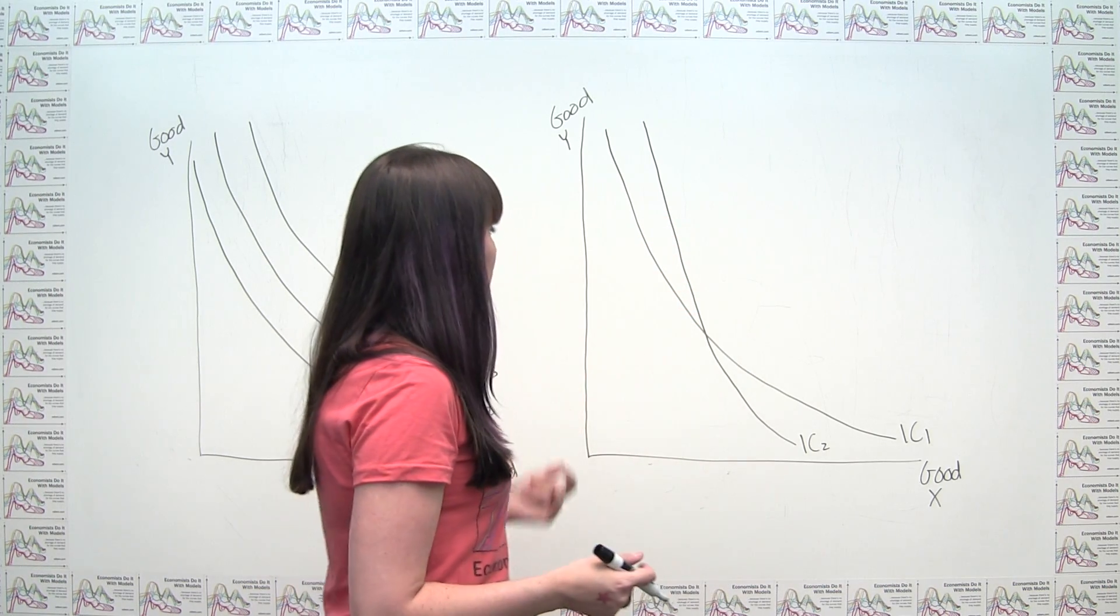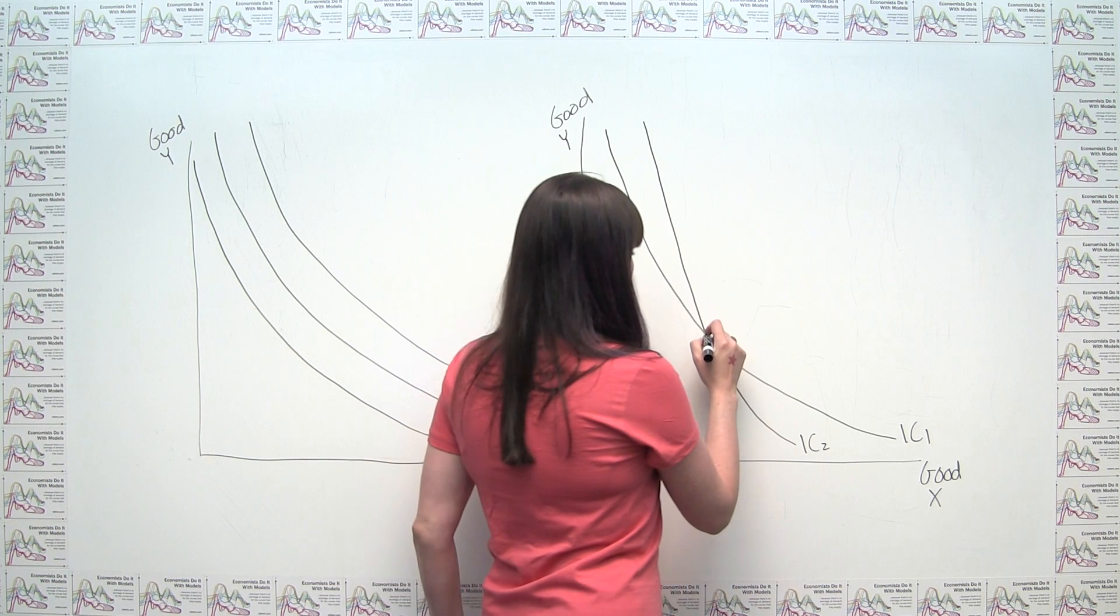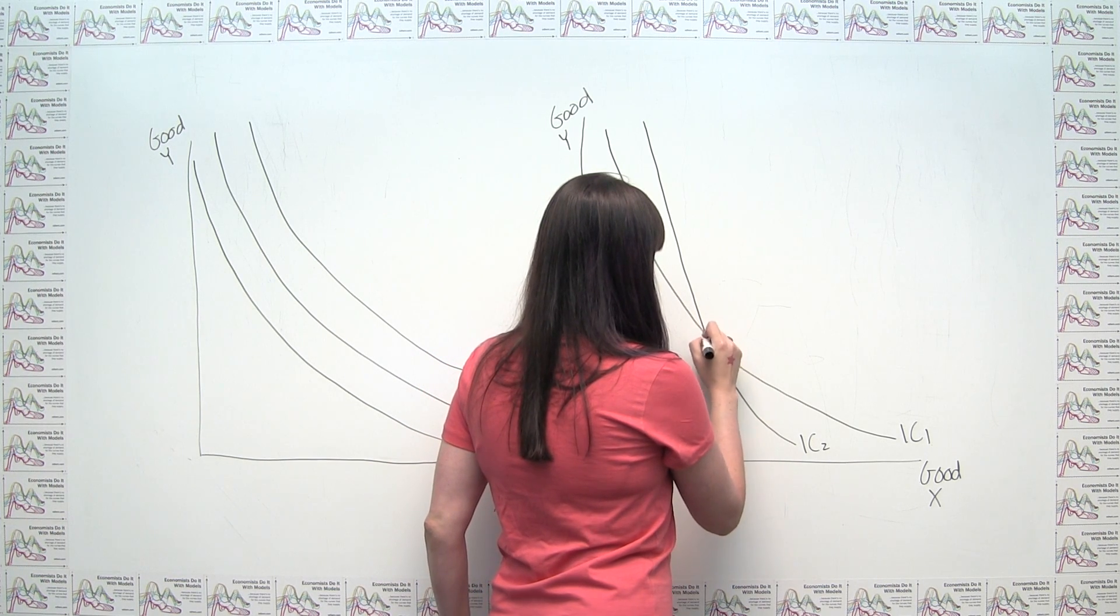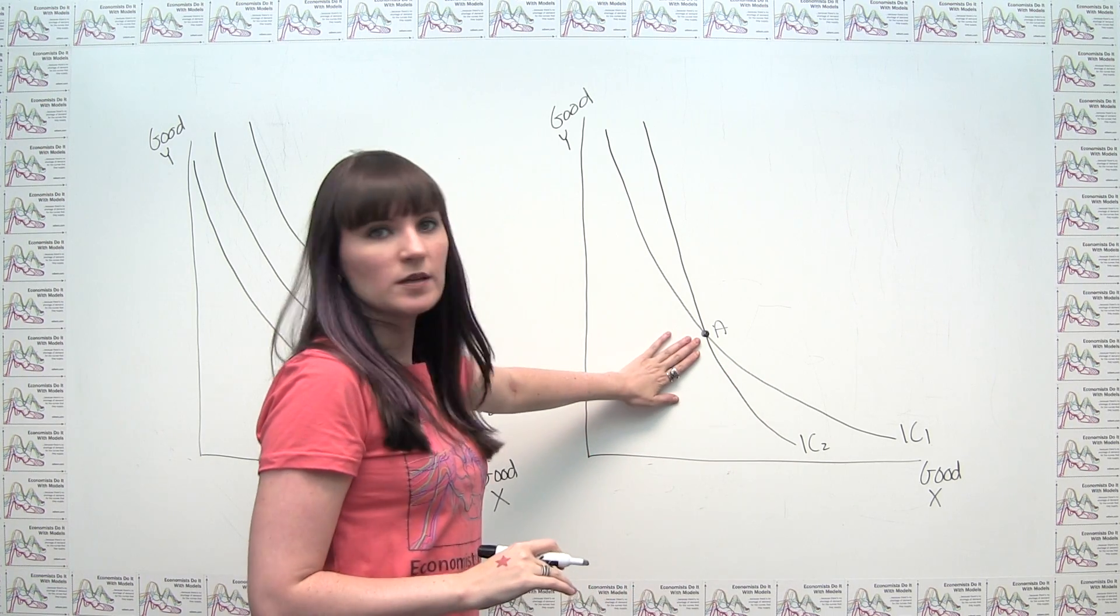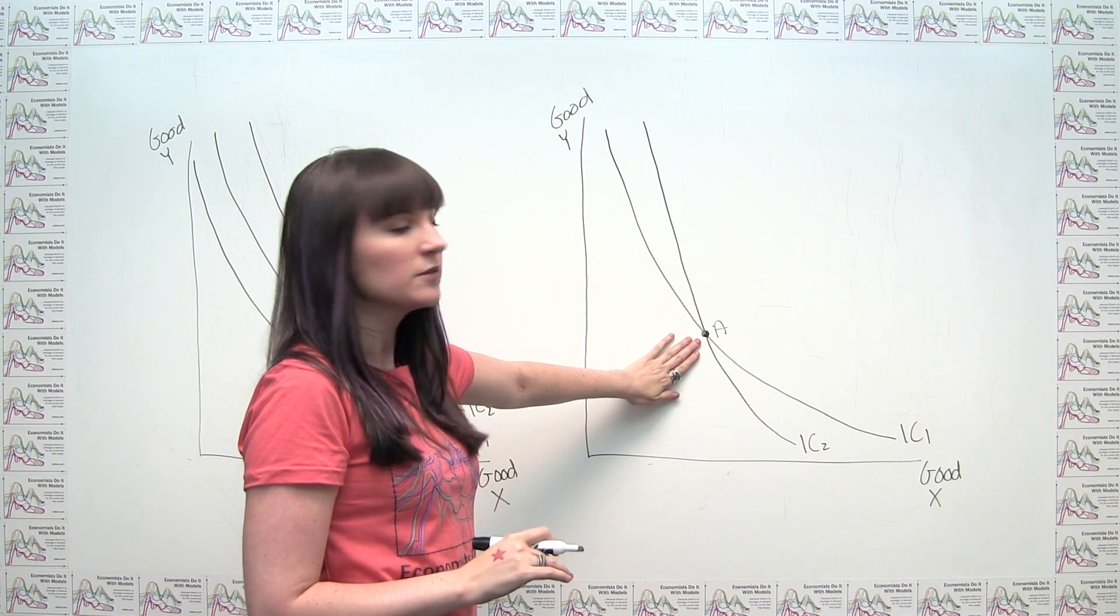So to think about this, what I can do is I can start by labeling three points on these indifference curves. The first one I'm going to label, call it point A, is the point of intersection between the two curves.